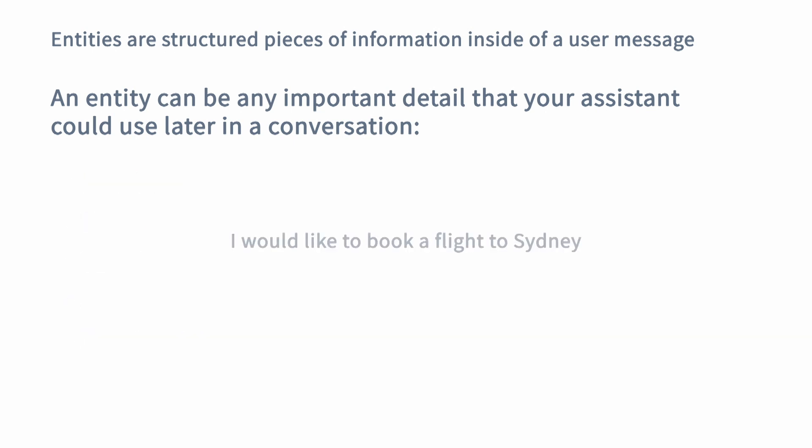For example, for a flight booking assistant it would be really useful to know which detail in the user's input is a destination. That's why in this example where the user says that they would like to book a ticket to Sydney, Sydney is being extracted as an entity of a type destination.